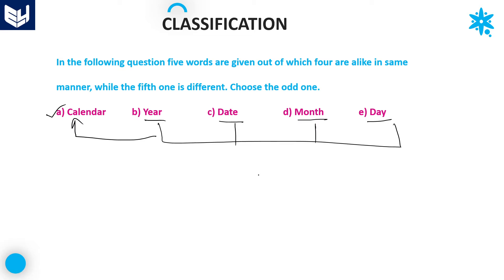Year, date, month, and day — these four are parts of a calendar. So calendar is the right answer for this question; it is the odd man out. Option A is the right answer.